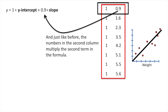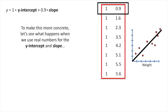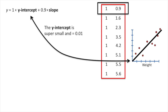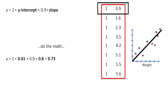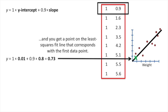The numbers in the second column multiply the second term in the formula — in this case, we're scaling the term for the slope. To make this more concrete, let's use real numbers: the y-intercept is super small and equals 0.01, and the slope equals 0.8. We plug those in and do the math, and we get a point on the least squares fit line that corresponds to the first data point.